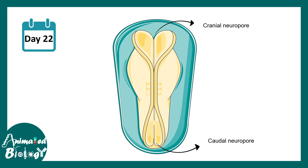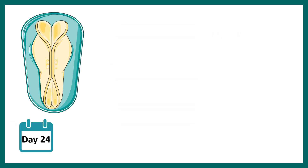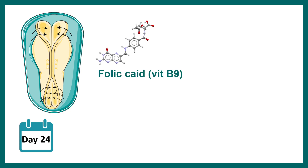Eventually, in order to form the tube, these two portions need to be closed properly. At around day 24, the cranial neuropore should be closing. In this closing procedure, there are nutrients which are super important, such as folic acid or vitamin B9. Without vitamin B9, this closure cannot happen, and that is why folic acid deficiency is detrimental.